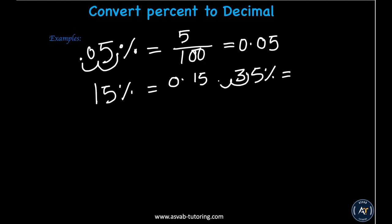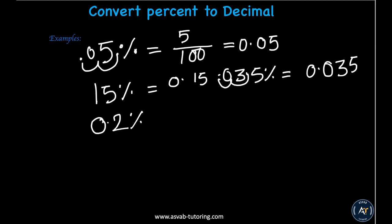How about 3.5%? Move two decimal places — one, two — so that is 0.035. For 0.2%, the same rule applies: move two decimal places — one, two — giving you 0.002.